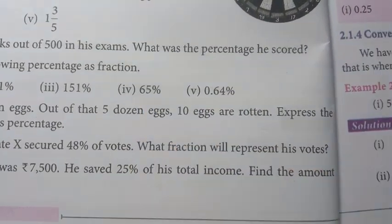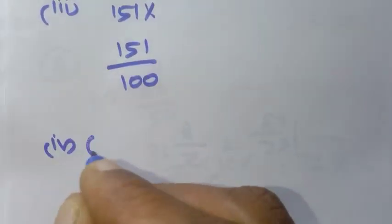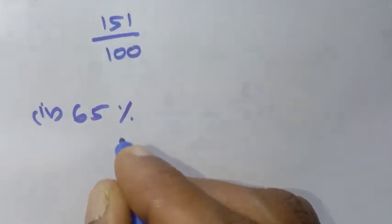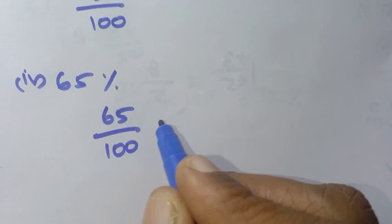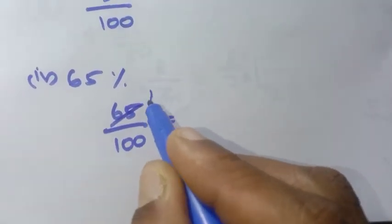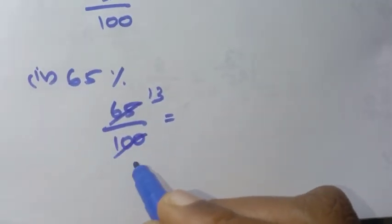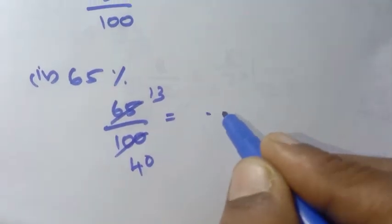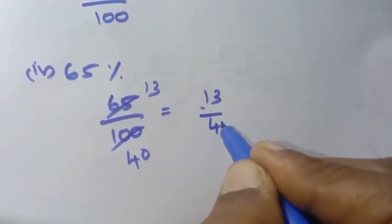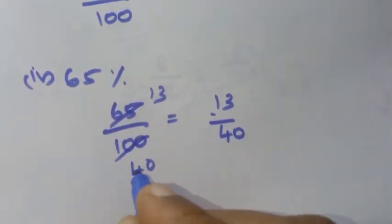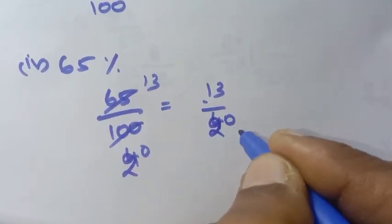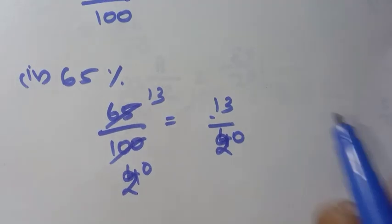Fourth one: 65 percentage. So, 65 percentage is written as 65 by 100. Now simplify — using the 5 times table. 5 ones are 5, 5 threes are 15, 5 fours are 20. So, simplifying gives 13 by 20. The answer is 13 by 20.